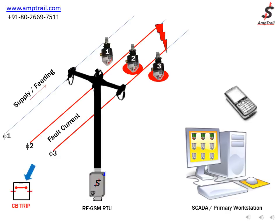Simultaneously, the circuit breaker will also trip. The fault current disappears as soon as the circuit breaker trips. However, the fault exists and the indicators continue to indicate.